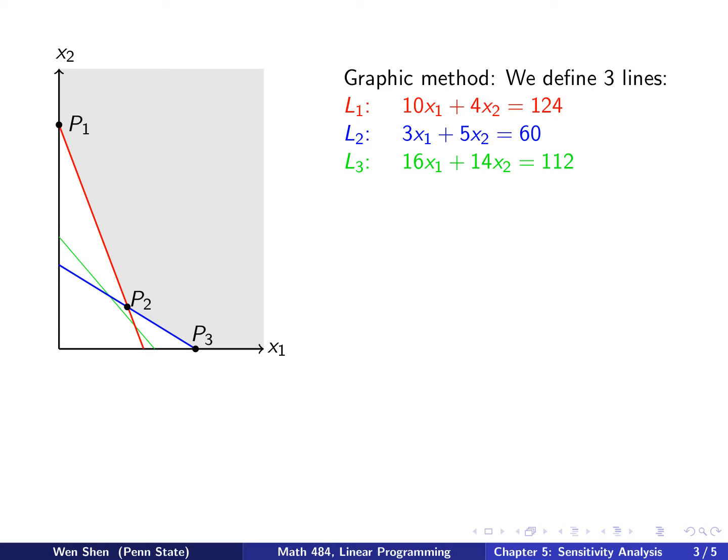There is a mistake in what I said. 112 is actually 16 times 14 divided by 2, but it doesn't matter, it's just a number. What is important is actually the slope of this line, we'll talk about that later.